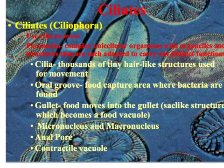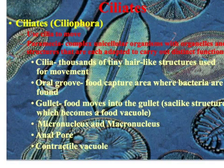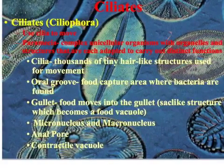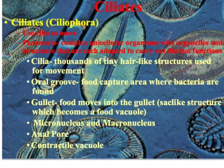Looking at the third type of protozoan — ciliates. Ciliates basically use cilia to move, and an example is paramecia. They are complex unicellular organisms with organelles and structures each adapted to carry out a distinct function. Cilia have thousands of tiny hair-like structures used for movement. They also have an oral groove that captures bacteria, a gullet which moves food into a sac-like structure that becomes a food vacuole. They have a micronucleus and a macronucleus — two different nuclei — which you'll observe when looking at these organisms under a microscope. They also have an anal pore for excretion and a contractile vacuole to regulate water pressure inside the cell.